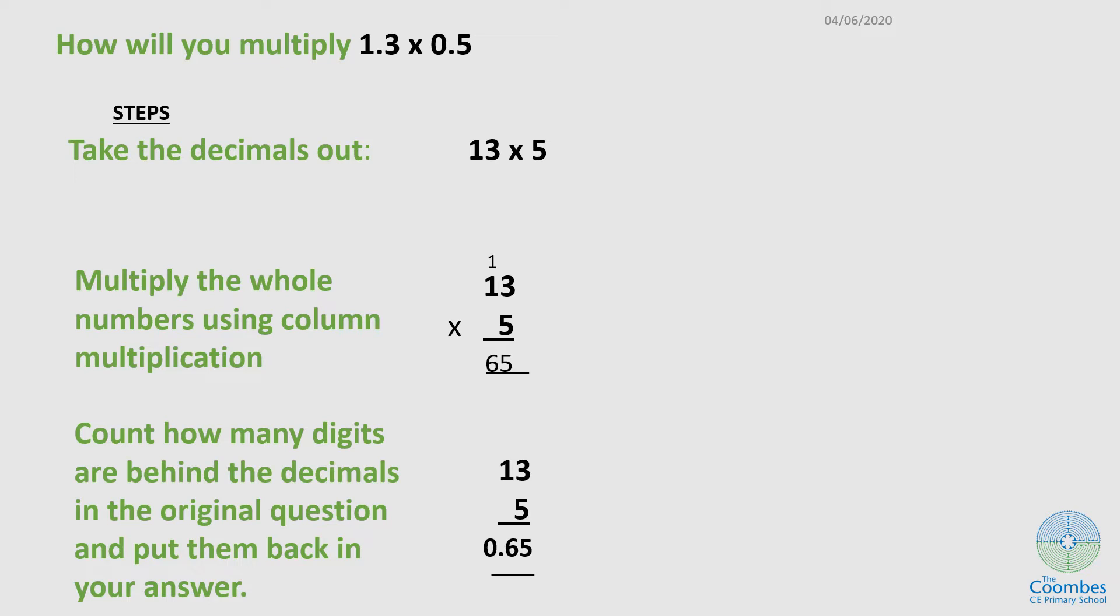The third step is count how many digits are behind the decimal in the original question and put them back. If you come with me to the original question, behind the decimal I have one decimal place here, and I have a second one here. So it's actually two decimal places.